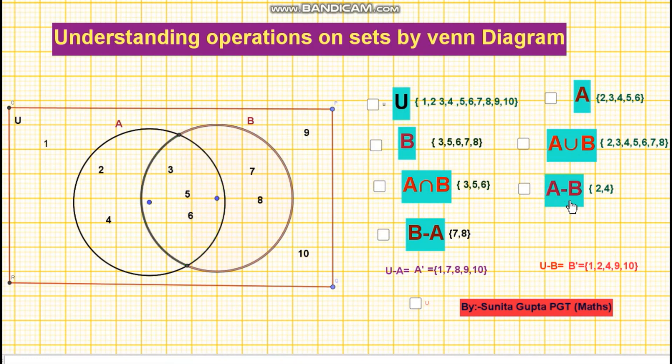Third operation is difference of sets. The difference of set A and set B is the set of all elements which belong to set A but not to B. So A minus B will be the shaded region as shown on your screen. So elements of set A minus B are 2, 4, because 2, 4 is included in set A but not set B.